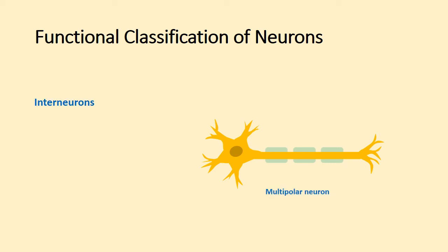Interneurons are found in the central nervous system and cause communication and signal transmission between neurons. Interneurons are structurally multipolar.